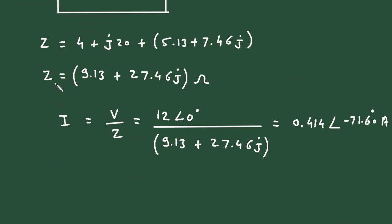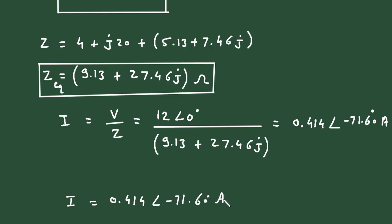So this Z is the value of Zeq. Then the value of i is equal to 0.414 at an angle -71.60 degrees ampere. So this is how we can find impedance and current in AC circuit.